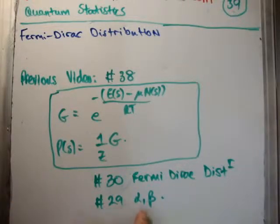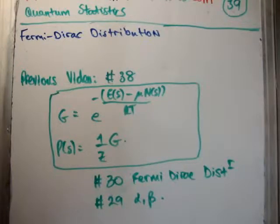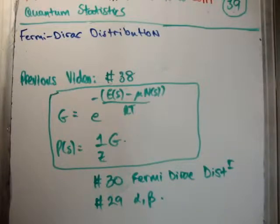Video number 29, by the way, I showed what alpha and beta are - that's what you'll need for video 30. The point of this video is that using the grand partition function makes calculating or deriving these distributions so much easier.